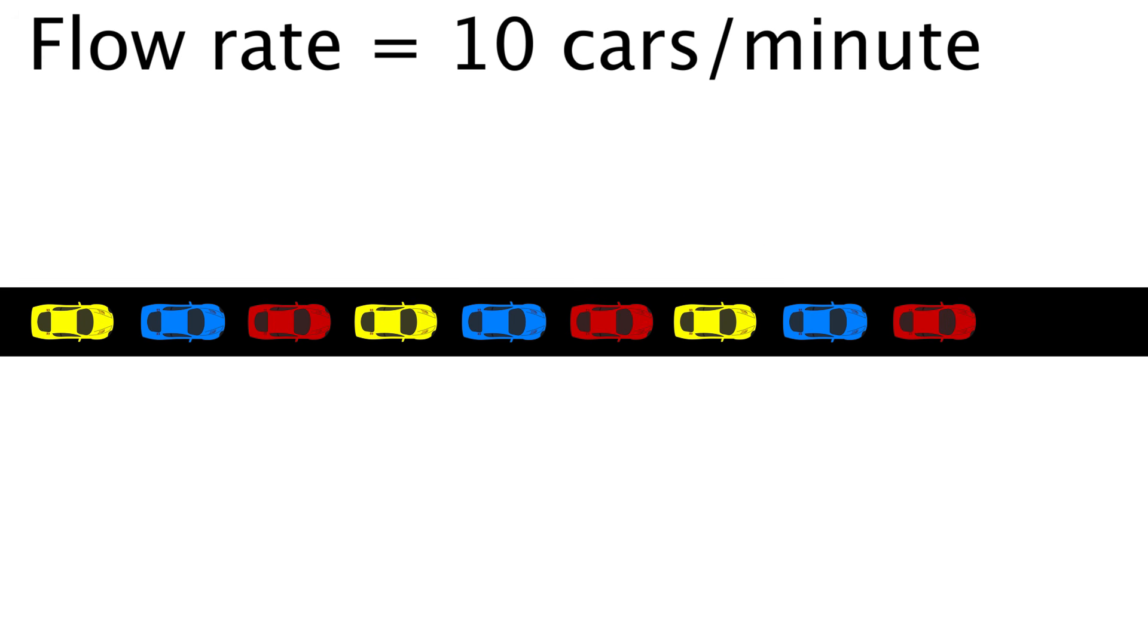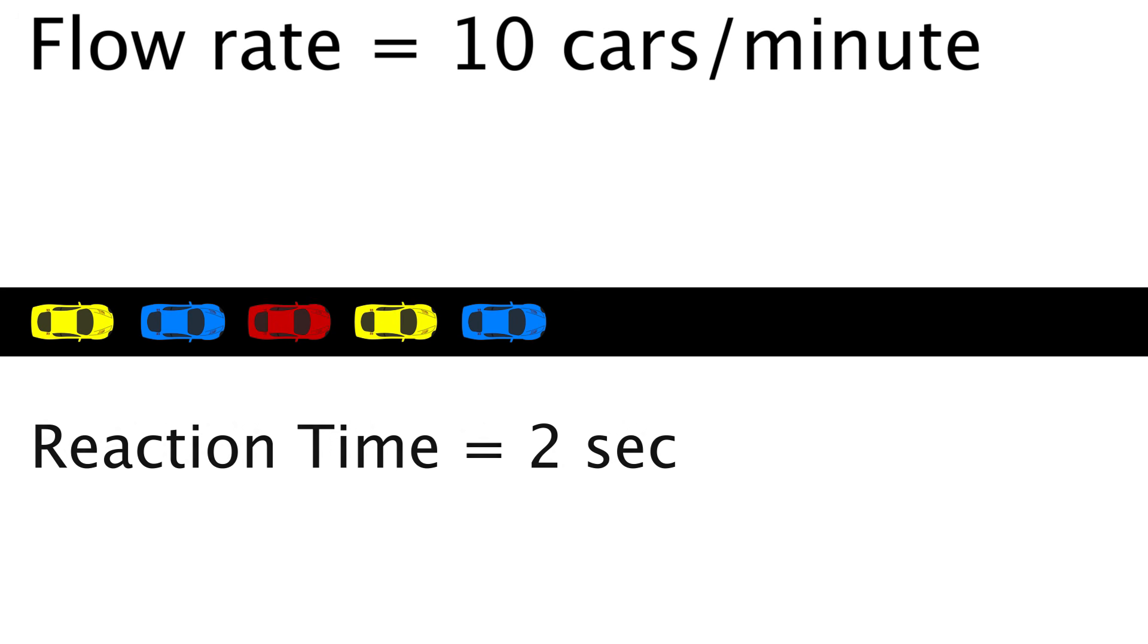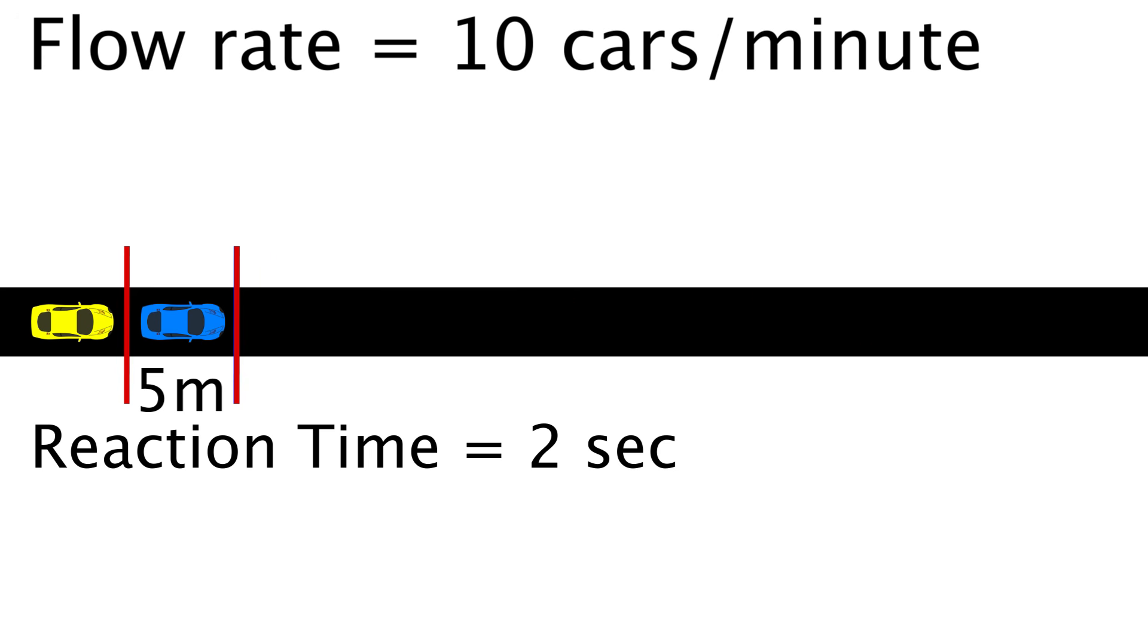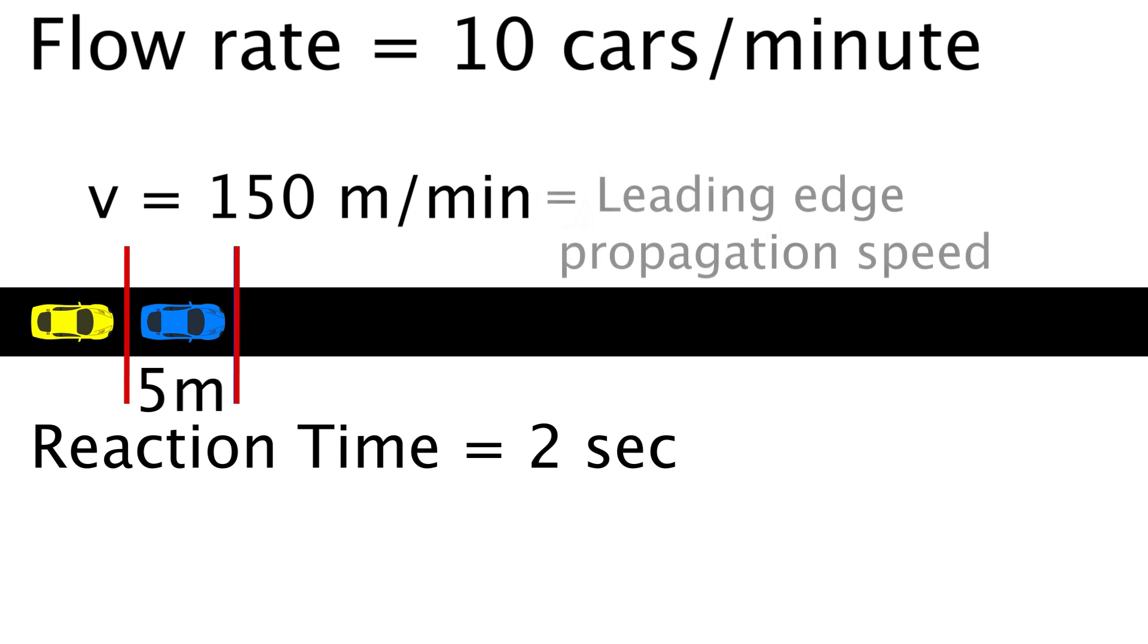Well, the first person starts moving, then there is a delay just due to reaction time until the second person starts to move. This repeats for the third, then the fourth, and so on. If we assume a reaction time of two seconds on average for each driver, that means the front of this traffic jam is moving backwards at a rate of one car every two seconds. And since they're spaced five meters apart, that line is moving at 2.5 meters per second, or 150 meters per minute. This is known as the leading edge propagation speed.